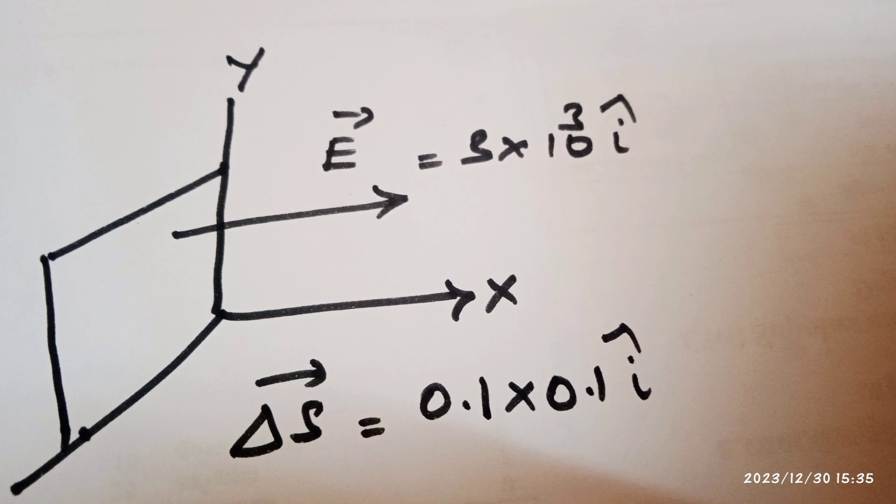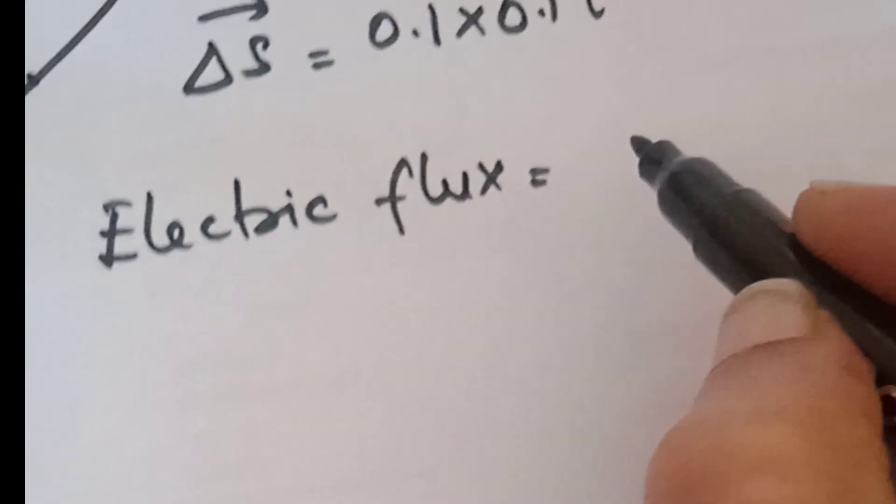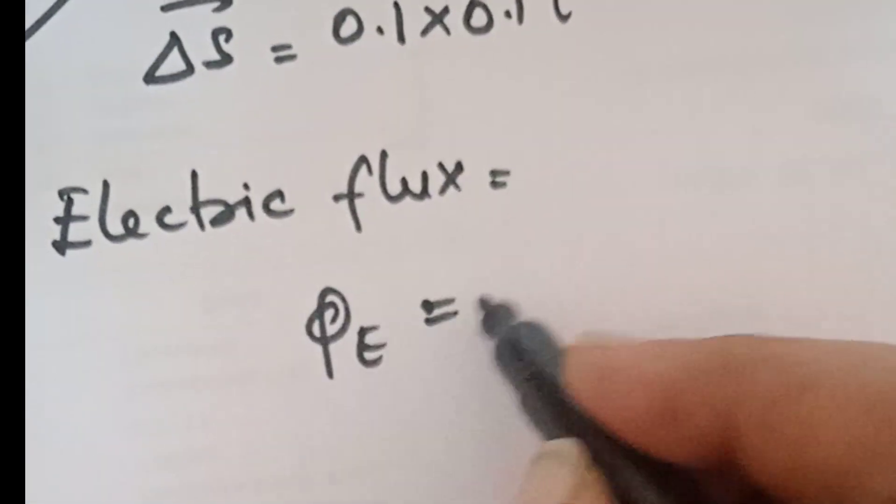So here we can take side to side to side. So electric flux is equal to phi e is equal to E vector dot del S vector.